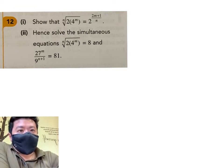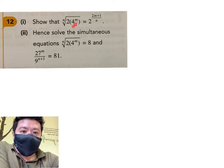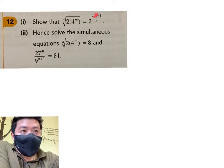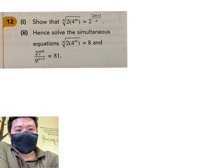For this question, we need to show that the n root of 2 multiplied to 4 power m is equal to 2 to the power of 2m plus 1 over n. That's very easy. What we do is we try to create the same base.